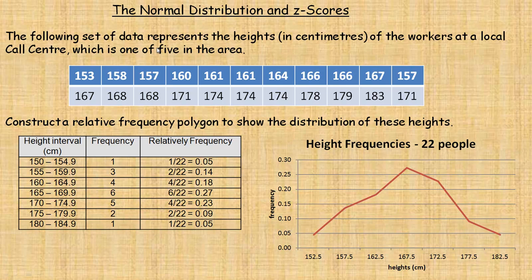In the first example here, we're given the heights in centimeters of 22 workers at a local call center. It's one of five in the area. We'll get into what that means on the next page. So here's the 22 people's heights in centimeters.